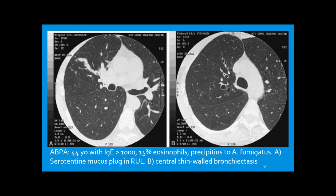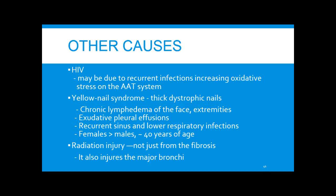On CT, a 44-year-old patient with IgE greater than 1,000 and 15% eosinophils shows mucus plugging in the right upper lobe and bronchiectasis with classic signet rings. Other causes include HIV — thought to be due to recurrent infections and increasing oxidative stress — and yellow nail syndrome, associated with dystrophic thick nails, chronic lymphedema of the face and extremities, exudative pleural effusions, and recurrent sinus and lower respiratory infections, with a propensity for females.